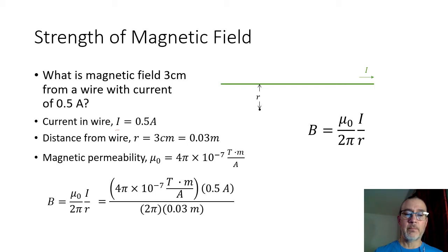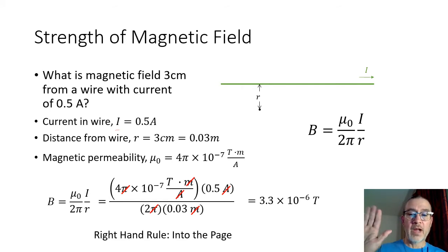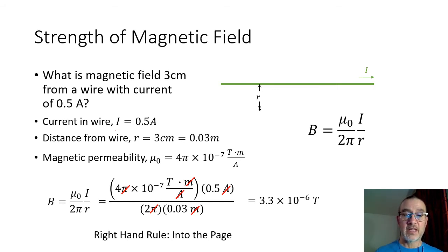Plugging into the equation B = μ₀/2π × I/R, we substitute 4π × 10⁻⁷ T·m/A for mu naught, I is 0.5 amps, the 2π remains, and the radius is 0.03 meters. The π's cancel out, and then the units — meters and amps also cancel out — leaving us with Tesla. Doing the calculations, we get 3.3 × 10⁻⁶ Tesla. And the direction: using the right-hand rule, with the current moving to the right, we wrap our fingers around and at the bottom of the wire we see the magnetic field is going away from us — so the direction is into the page.